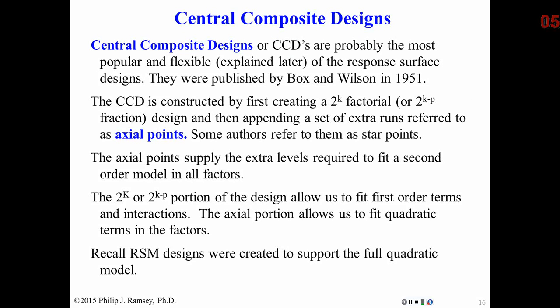They are comprised of two portions. Usually there's a factorial portion—that's usually a 2 to the k or 2 to the k minus p fraction—and then an additional set of runs that Box called axial points. These runs are there to fit second-order terms. That's their only purpose. Typically one first runs the factorial portion with center points. This lets you estimate main effects and two-way interactions, and the center points let you test for curvature. If you find curvature, then you can go ahead and fit the axial points because that indicates you need quadratic terms in the model. If no curvature is found, then one can just drop the axial portion. Again, the axial portion is only used to fit quadratic terms, so if there's no curvature, the points are unnecessary.